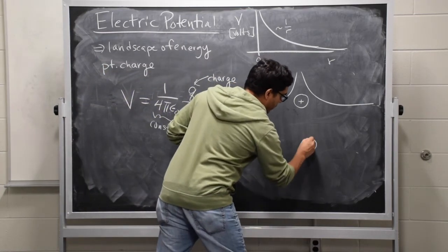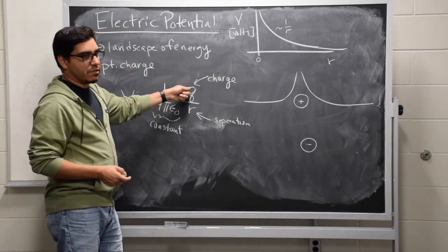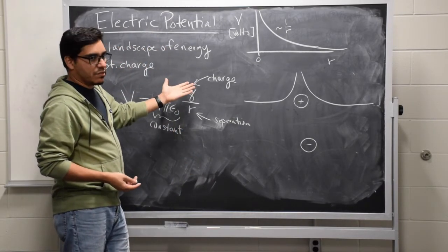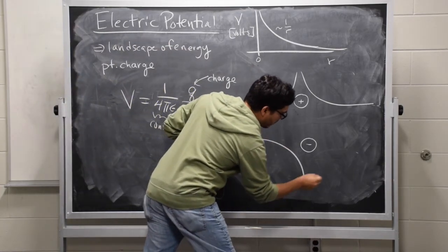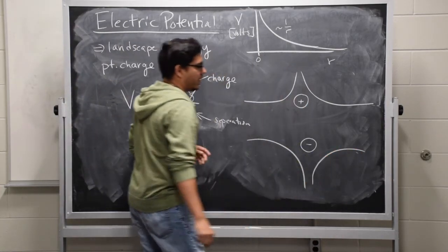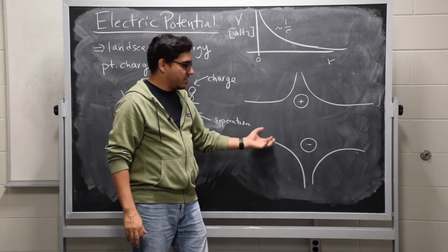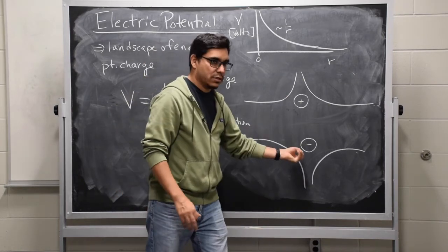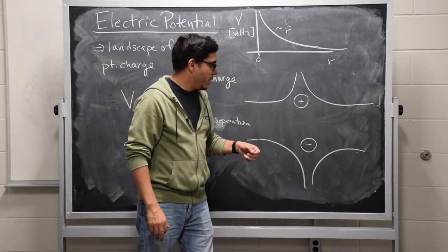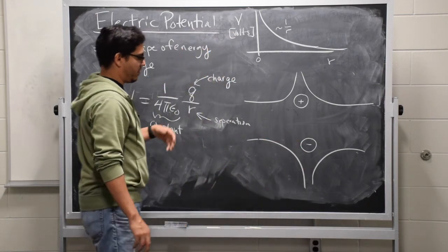Similarly, if you have a negative charge, what ends up happening is this Q takes on a minus sign, so everything is just mirror flipped. Instead of a hill, you end up with a well. In your experience, positive charges are attracted to negative charges, and this gives you a sense of how that might work. A positive charge would kind of roll into the well here and in a sense be trapped. That's precisely what would happen.